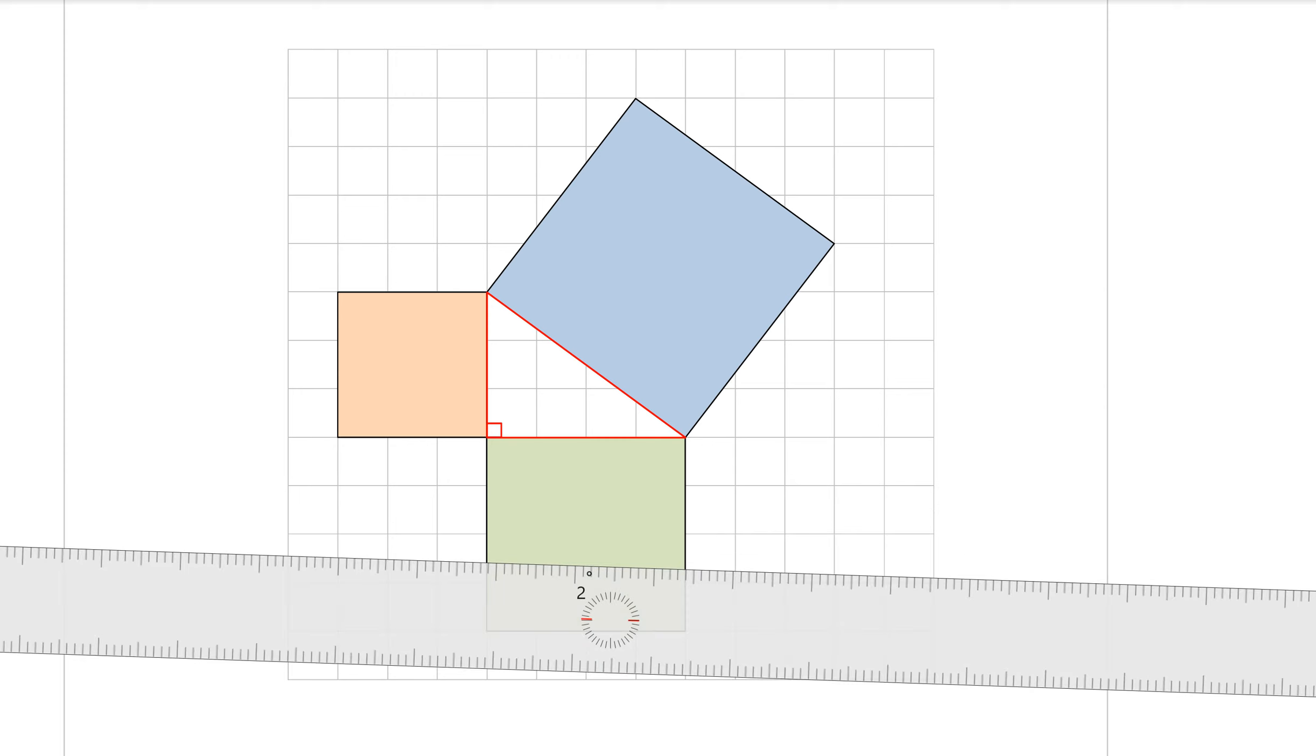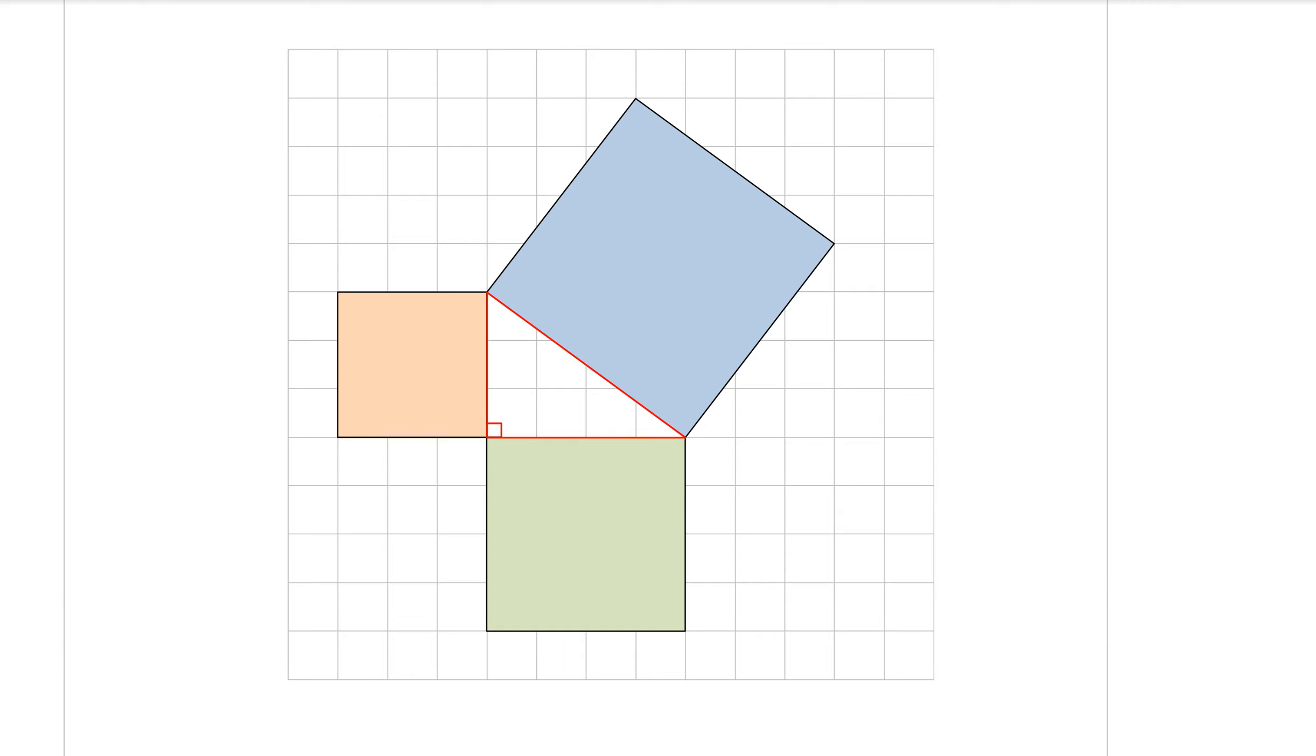But you can use the grid to help you count. So you count one, two, three, four spaces for that green square there. So the side of that green square is four centimetres. Now that would mean that that square there would have an area of four times four, which is 16 centimetres squared for the area of that square.